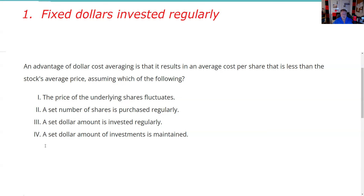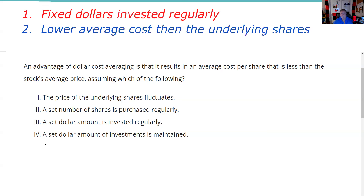It also makes sense to invest in drips and drabs, because that's how most people get money. Most people don't get $100,000 to drop into the stock market, but a lot of people give me $50 a month, $100 a month, whatever the case may be. The second test question is that you end up with a lower average cost than the average price of the underlying shares. I'd be prepared to do a simple average of that on the test.